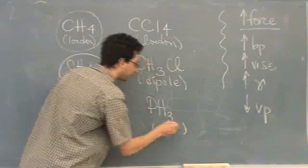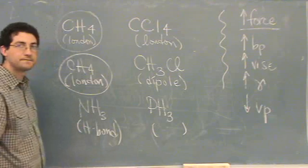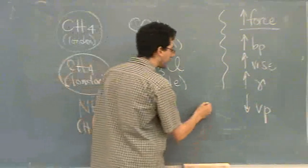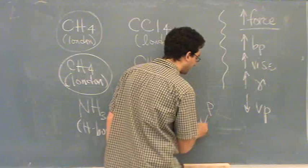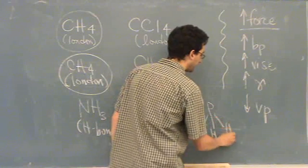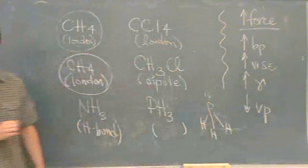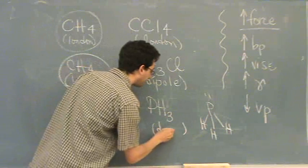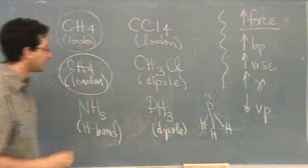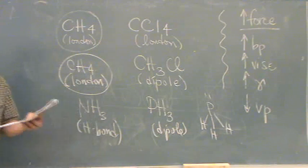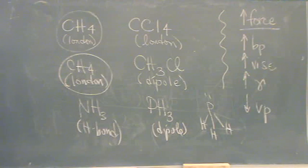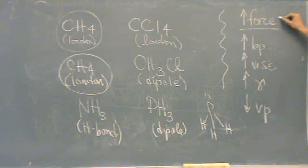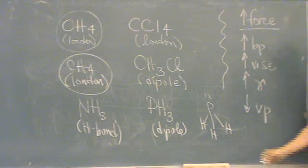What's PH3? Is it asymmetric? PH3 has what shape? Trigonal pyramidal. It looks just like ammonia. So it has a dipole. The H-bond would be stronger. What did we want? We wanted the molecule with the higher boiling point. Higher boiling point means higher force. The one with the H-bond's going to take it.